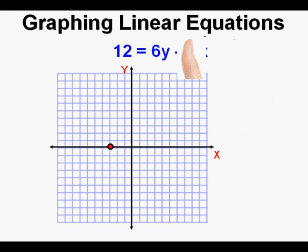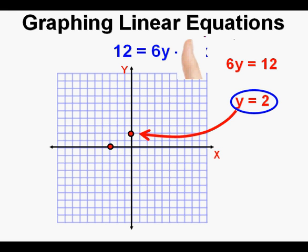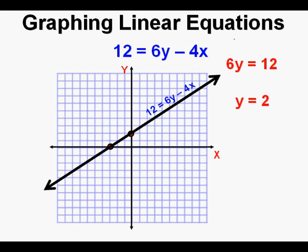We now cover the x-term to solve for the y-intercept. This leaves us with 6y equals 12. We solve for the y-intercept by dividing both sides by 6, and since 12 divided by 6 is 2, our y-intercept is 2. We mark the y-intercept on the y-axis at y equals 2, then draw the line through the two points. This is the graph of the equation 12 equals 6y minus 4x.